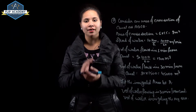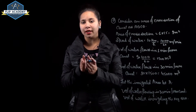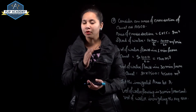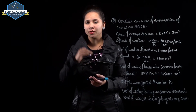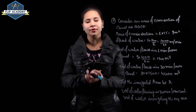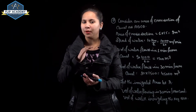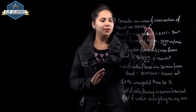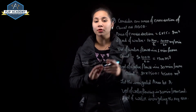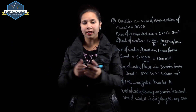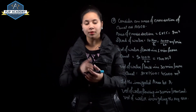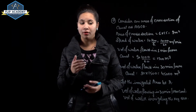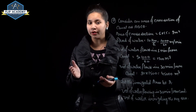Given: width of the canal = 6 m, depth = 1.5 m. Area of cross section = 6 × 1.5 = 9 m². Speed of water = 10 km/hr.